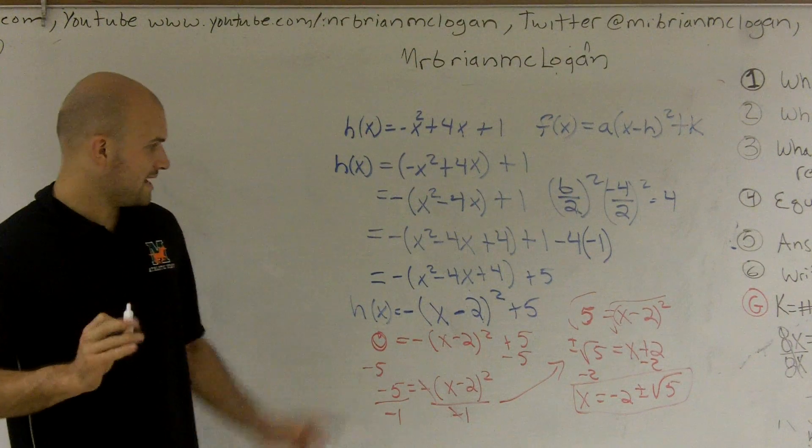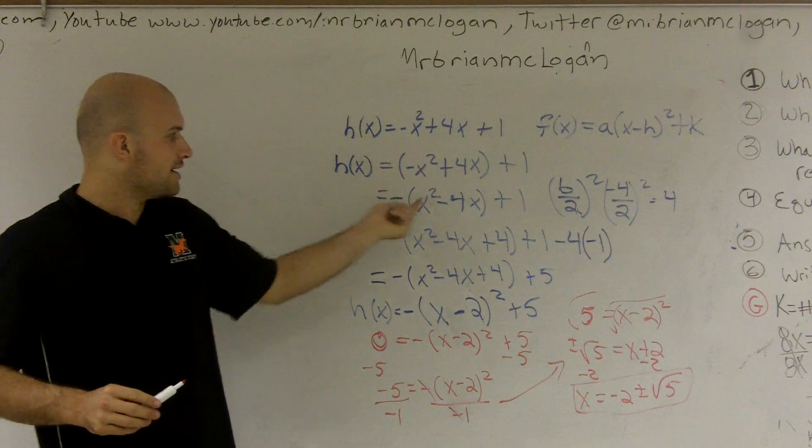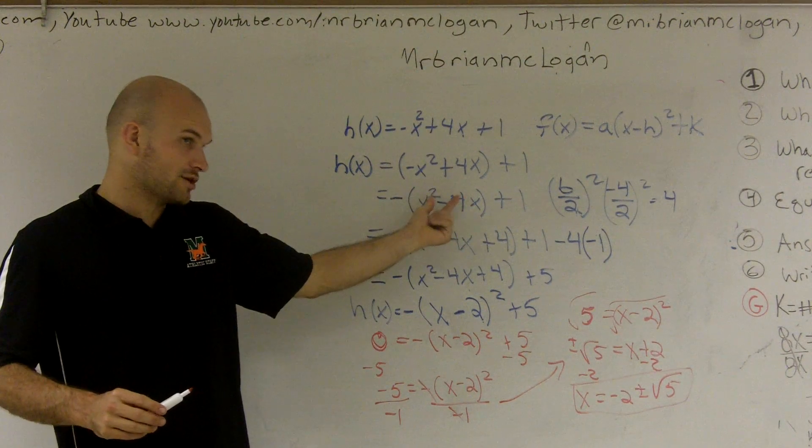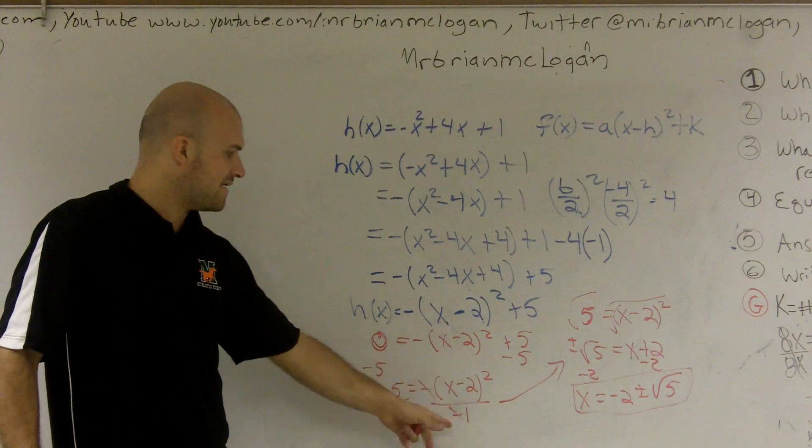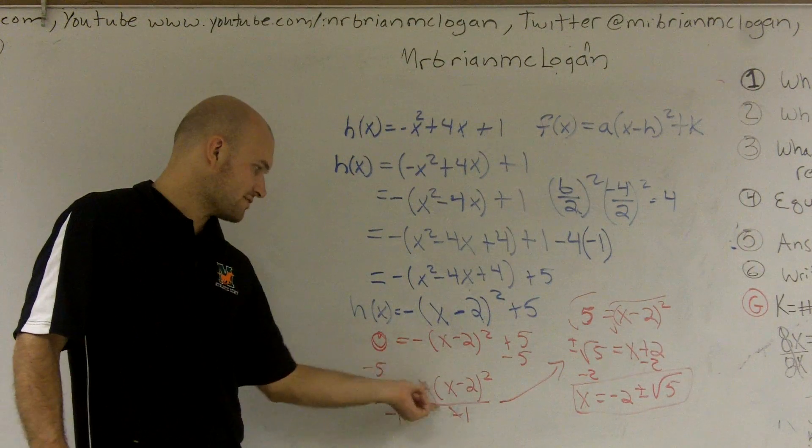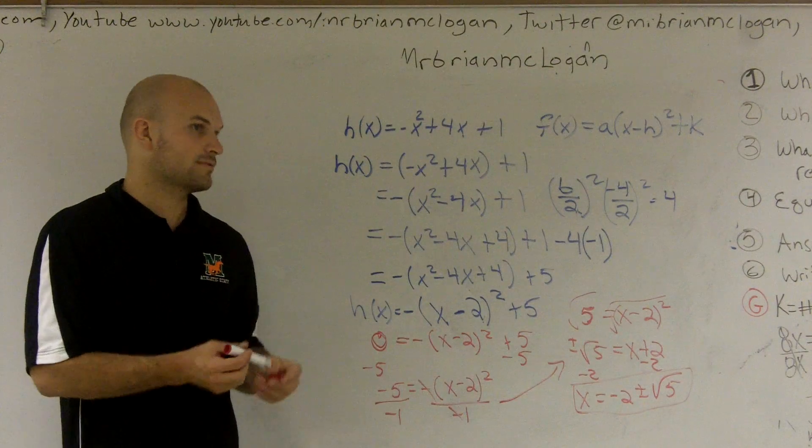The two mistakes that you made were, first, not factoring that negative 1 out of both of my terms. And the other mistake you made was you had this negative 1. You didn't divide that out first. Whatever you factor out, you've got to get rid of that before you take the square root.